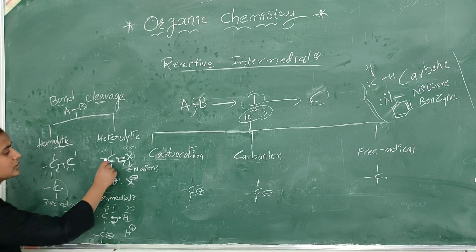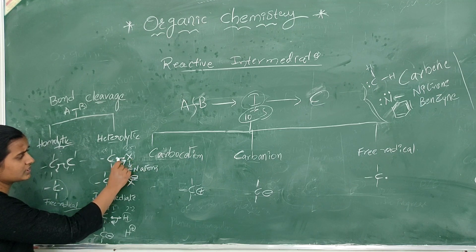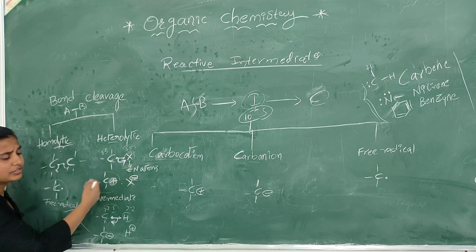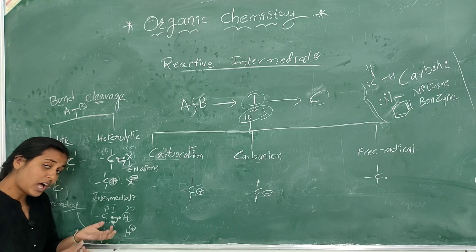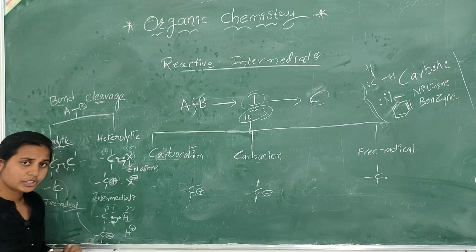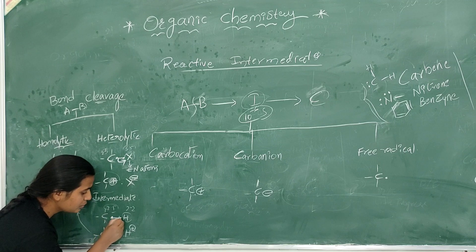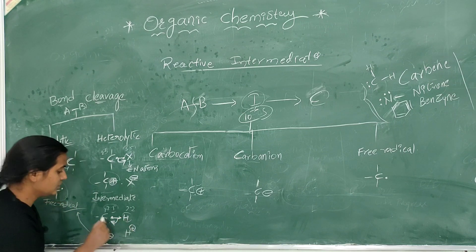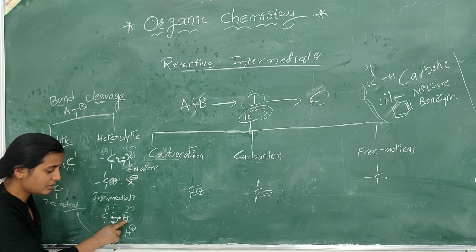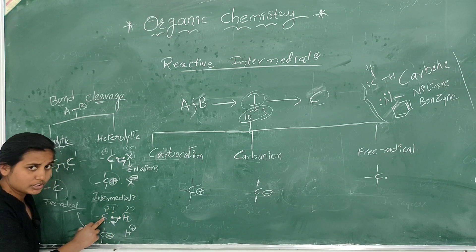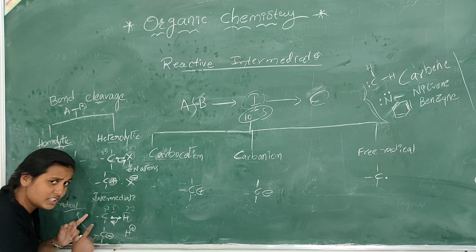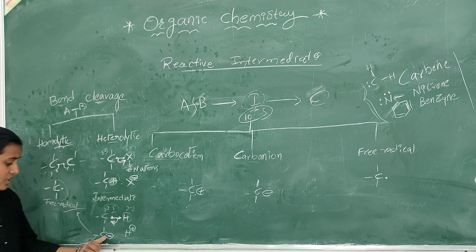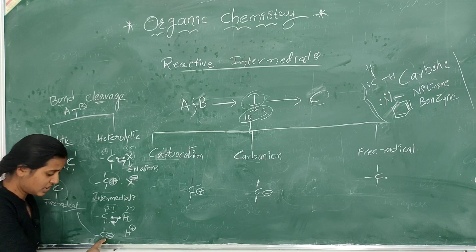Carbon with a positive charge is called a carbocation, and this is the carbocation intermediate. Now for another case — if carbon has more electronegativity than the other atom, the two electrons of the covalent bond shift towards carbon. For example, carbon has electronegativity 2.5 and hydrogen has 2.1, so carbon is more electronegative. The two electrons shift towards carbon, forming carbon with a negative charge — this is called a carbanion.